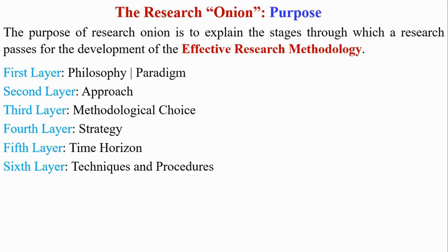Research Onion has six layers. First is related to philosophy and paradigm. Second is related to approach. Third is methodological choice. Fourth is strategy. Fifth is time horizon. And sixth is related to techniques and procedures.